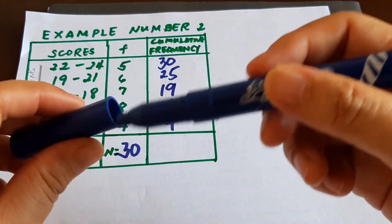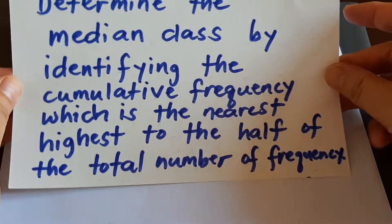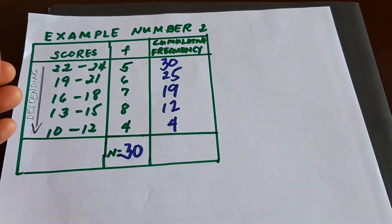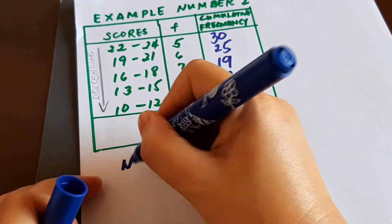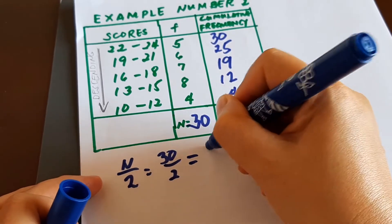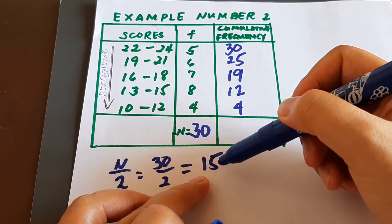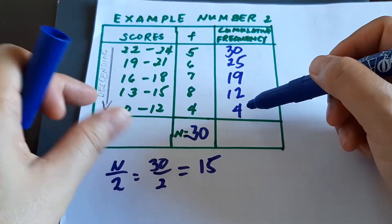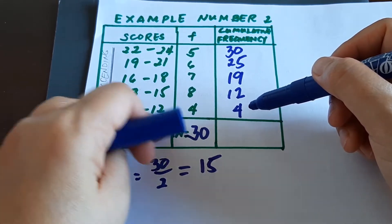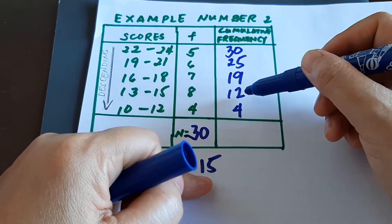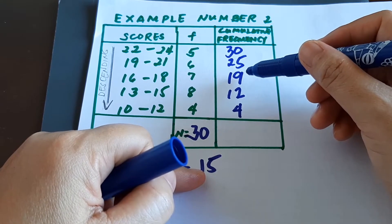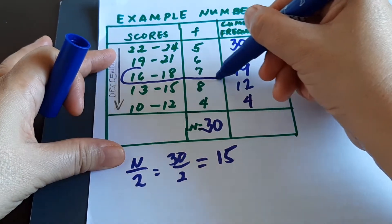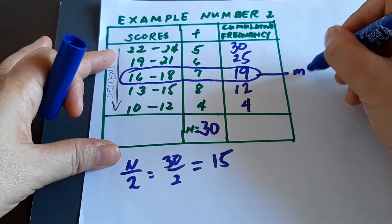Step three: determine the median class by identifying the cumulative frequency nearest to and highest above n/2. Here, n/2 = 30/2 = 15. Starting from the bottom: 4 is still lower than 15, 12 is still lower than 15, 19 is higher than 15. Therefore, the class 16–18 is your median class.